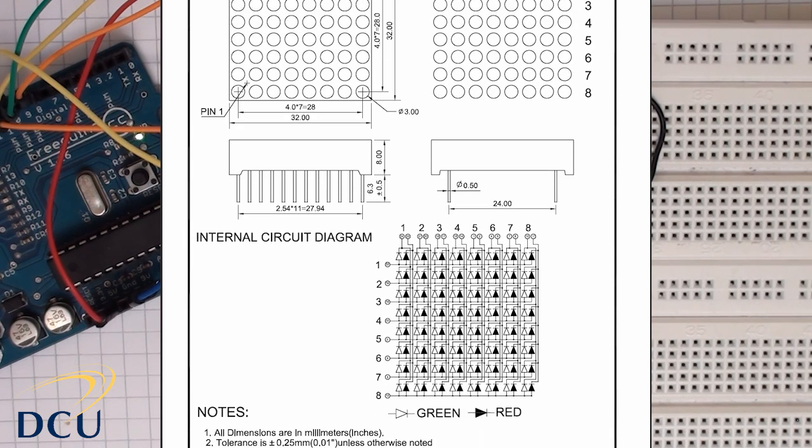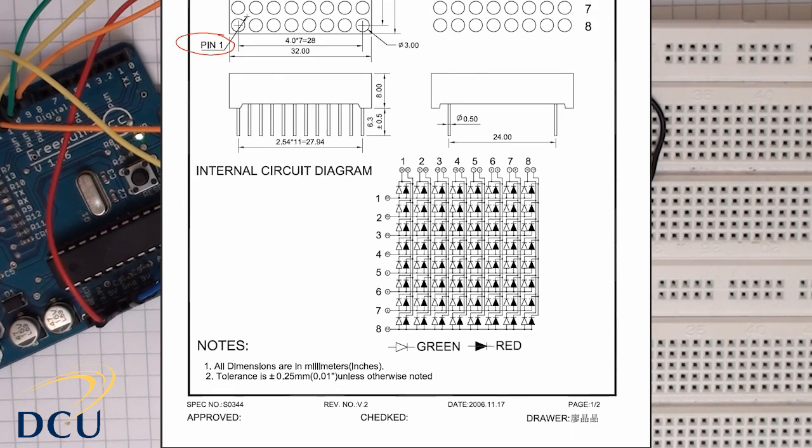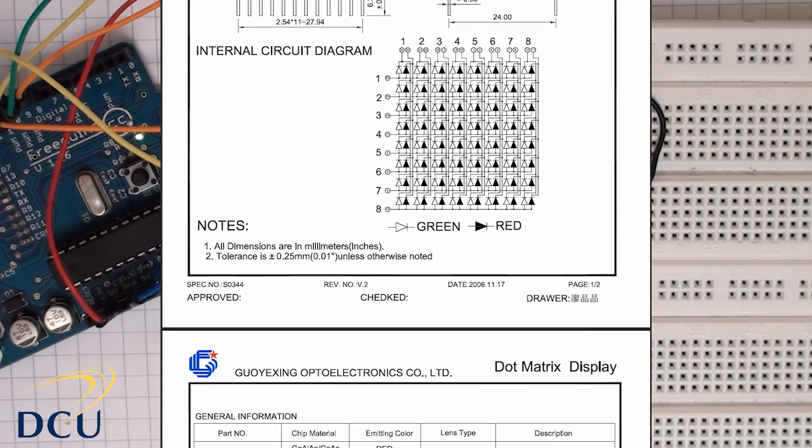Pin 1 is on the bottom left hand side of the data sheet, and you can see here on the outside it is the pin to the left of the text. The array is made up of red LEDs and green LEDs, so in actual fact we have 128 LEDs in this array.